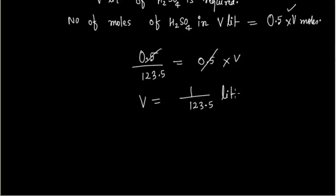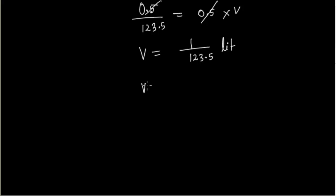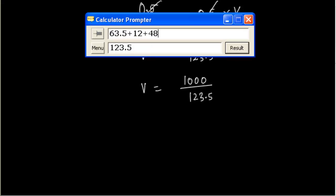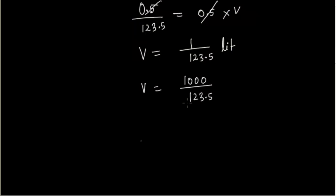Converting to milliliters: V equals 1000 divided by 123.5, which is 8.097 milliliters.